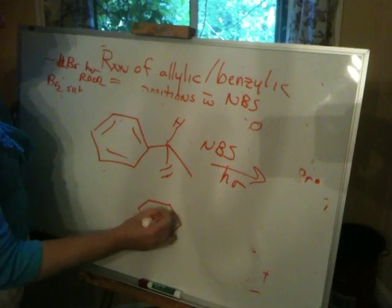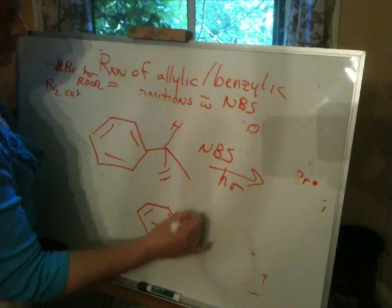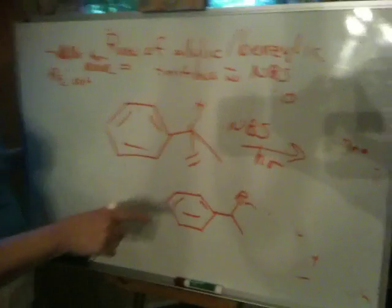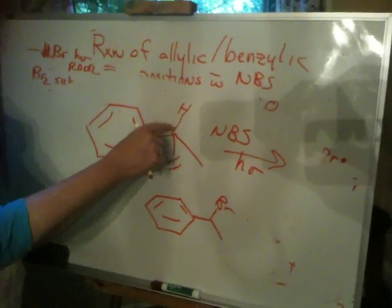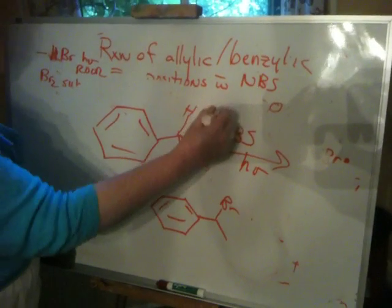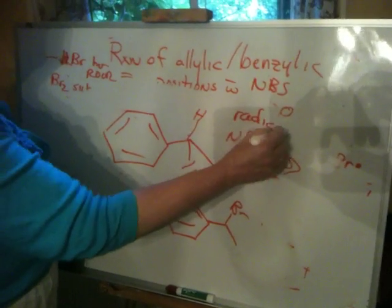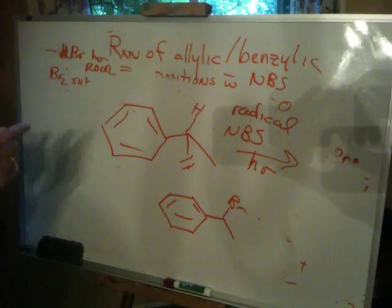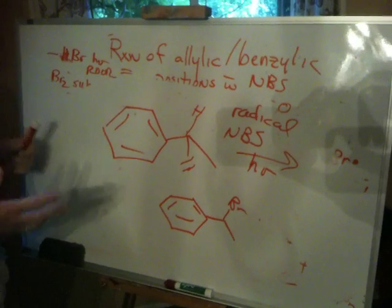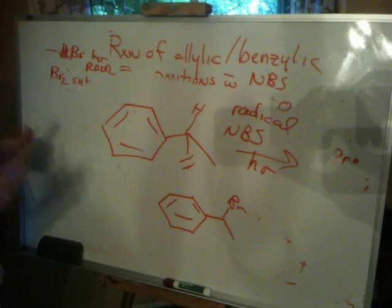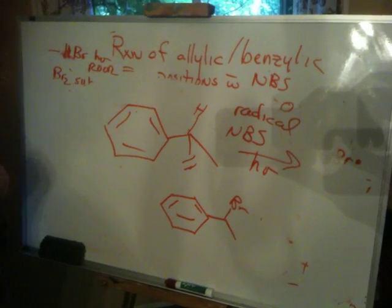By the way, this is all in Chapter 17. You would expect to get that because this is a radical reaction, and you should be able to write that mechanism out. It's really just a Br2 reaction — just a different source of Br2. I'll see you in class.